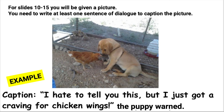So for this picture, we chose to use the caption: "I hate to tell you this, but I just got a craving for chicken wings," the puppy warned. So we had the quotations in the right place. We had an exclamation point because the puppy is warning that chicken is about to be lunch.